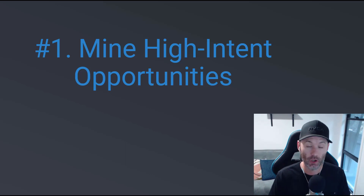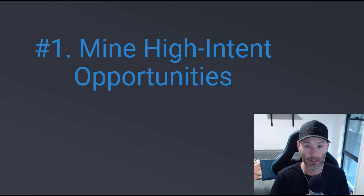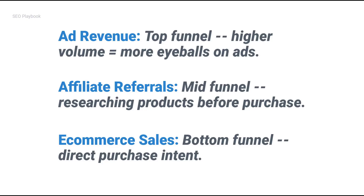The reason we do this is because not all keyword types are created equal. Certain types of intent map better to different business or site monetization models. For example, if your site is monetized primarily by AdSense revenue, you're likely going to want to prioritize high-volume top-funnel informational keywords. If you run a site monetized primarily by affiliate revenue, you'll likely prioritize mid-funnel investigational keywords that people may be researching right before the point of purchase. And if you run an e-commerce site, you'll likely prioritize transactional or investigational intent topics.